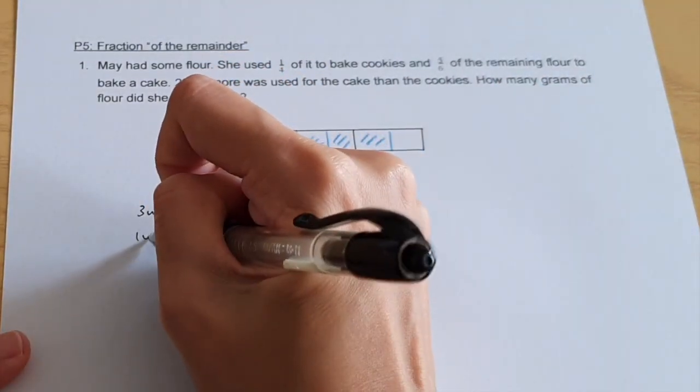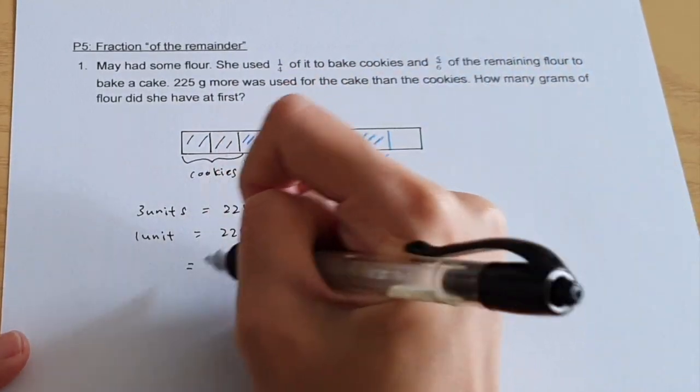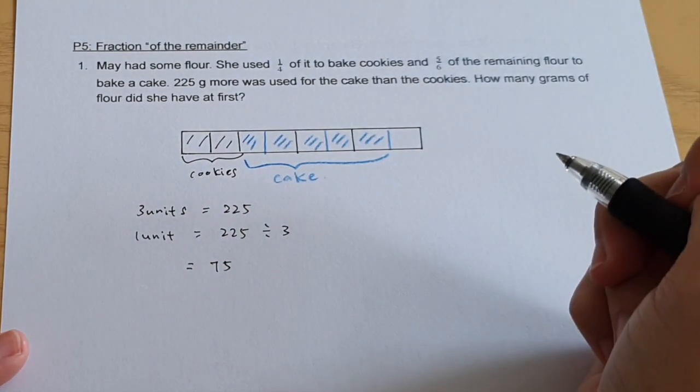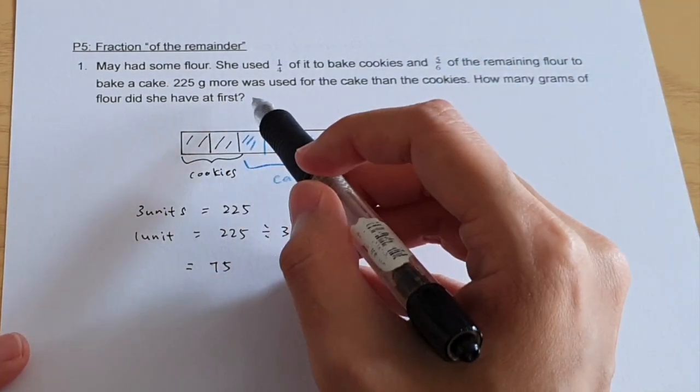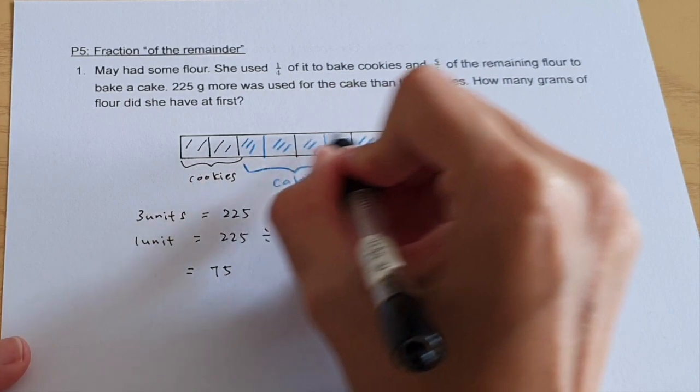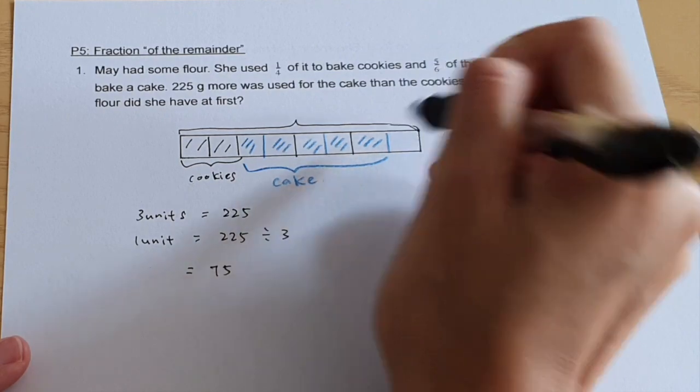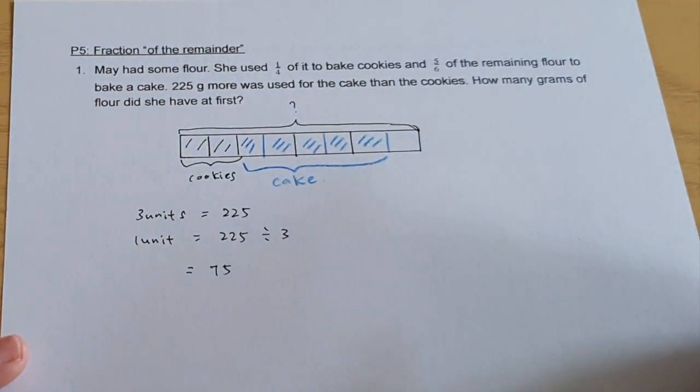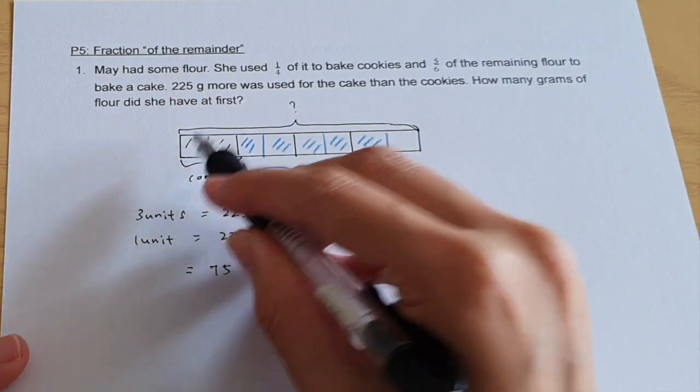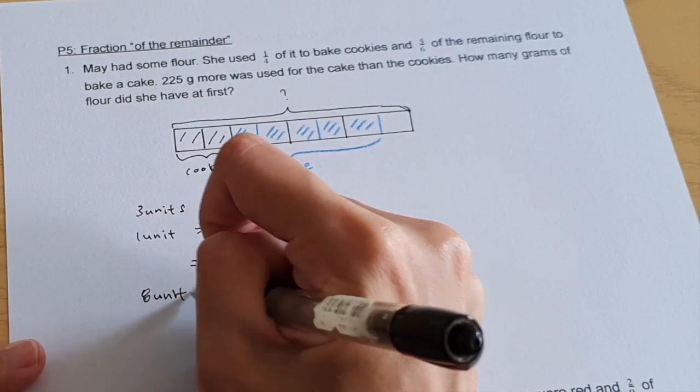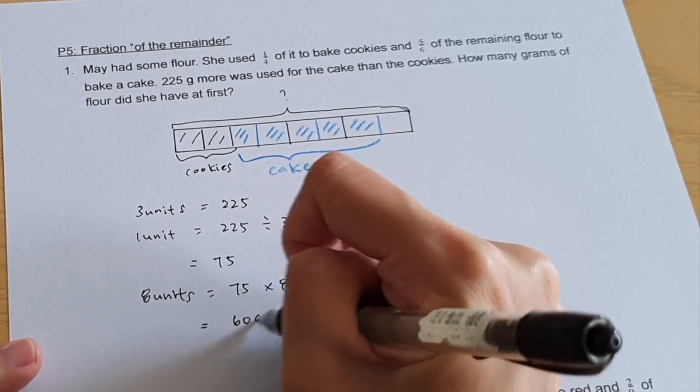To find one unit, we will take 225 divided by three which gives us 75. How many grams of flour did she have at first? So if we're looking for at first, we're looking for the entire bar which means from here all the way to the end. This is the question mark. To find the whole bar, we need to find one, two, three, four, five, six, seven, eight units. So eight units equals to 75 times eight which is 600 grams.